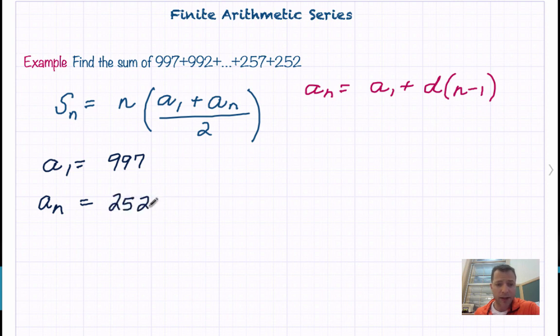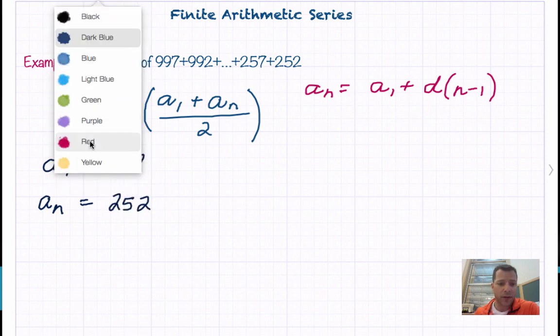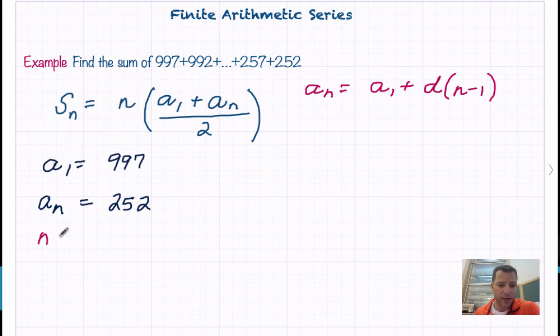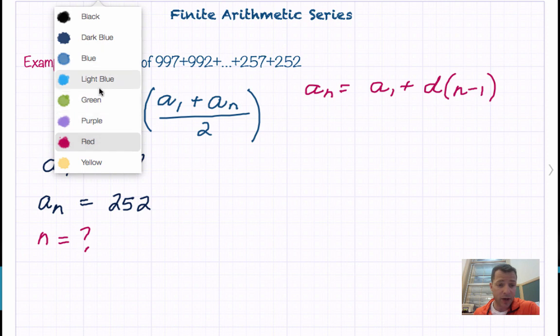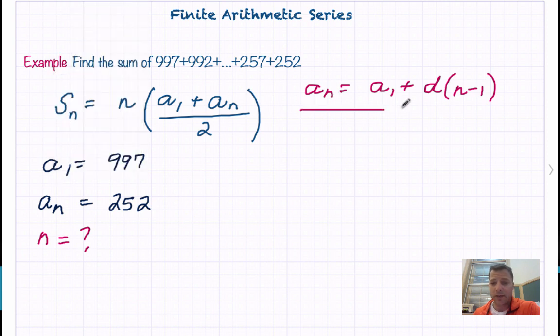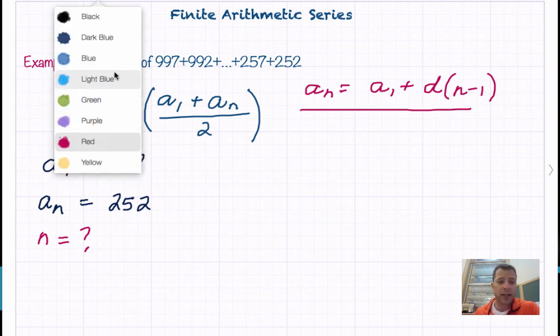The problem here is if we wanted to use this formula, we don't know what n is. But we can find n using this formula, because we know what A sub n is.